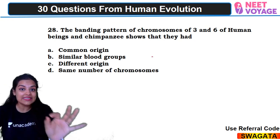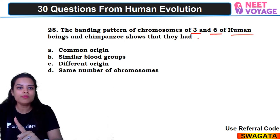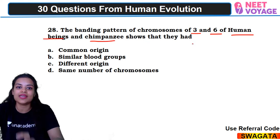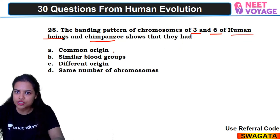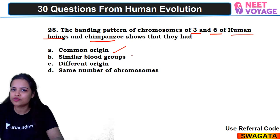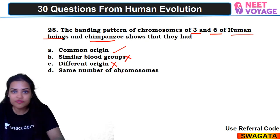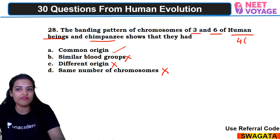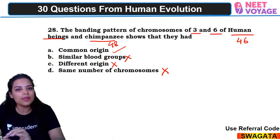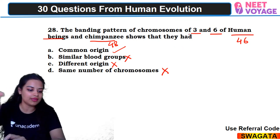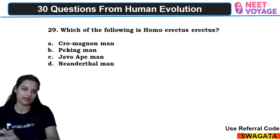Twenty-eighth question: the banding pattern of chromosomes 3 and 6 of human beings and chimpanzee shows what? This shows common origin — not same blood group or different origin. Same number of chromosomes is also incorrect — humans have 46 chromosomes while chimpanzees and apes have 48. The correct answer is A — common origin. Ram Prasad answered correctly.